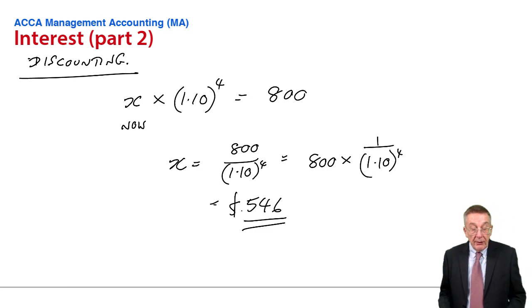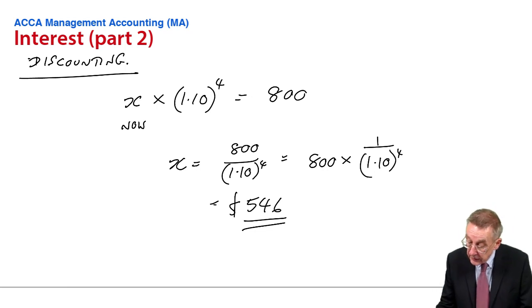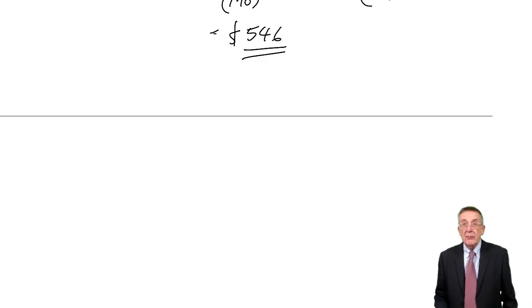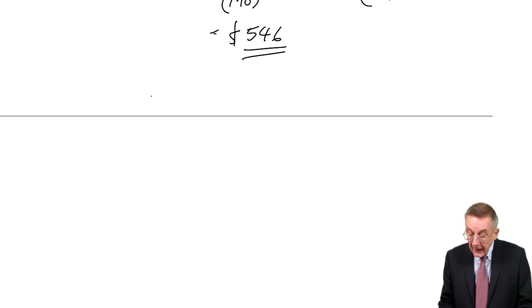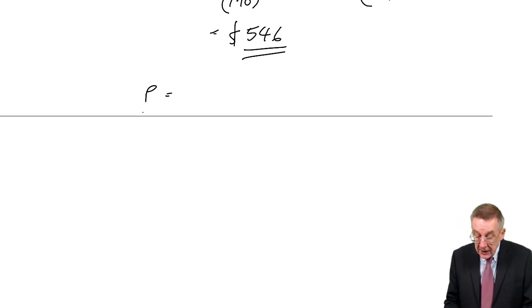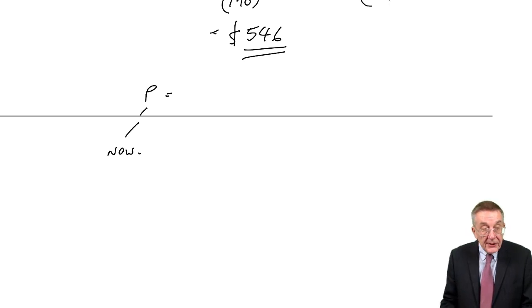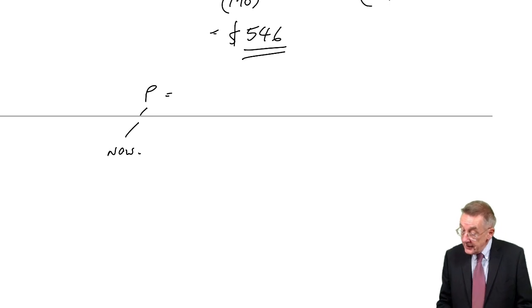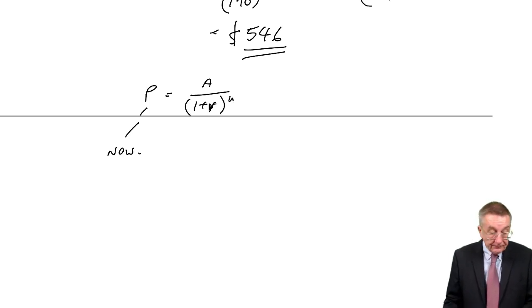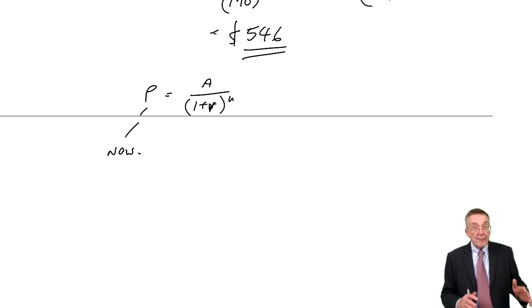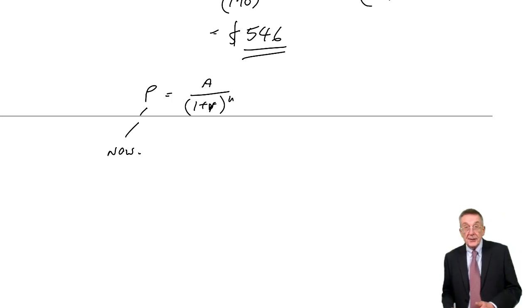You can see over the page there is a formula for that, but if you've understood me so far, I think you really don't need the formula. The principle — the amount now — is equal to the amount at the end, A, divided by 1 plus r to the power n, where r is the rate of interest and n is the number of years.